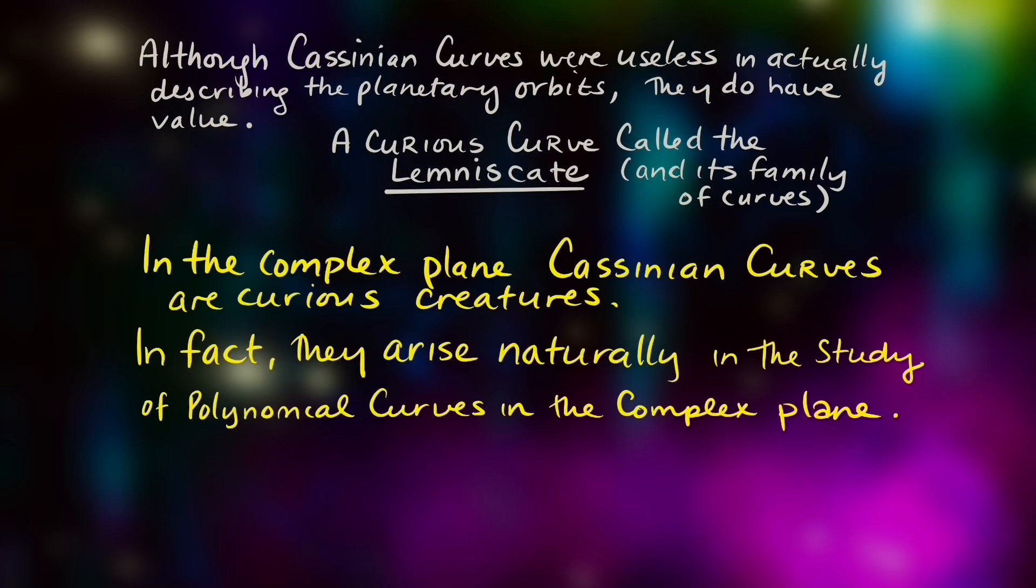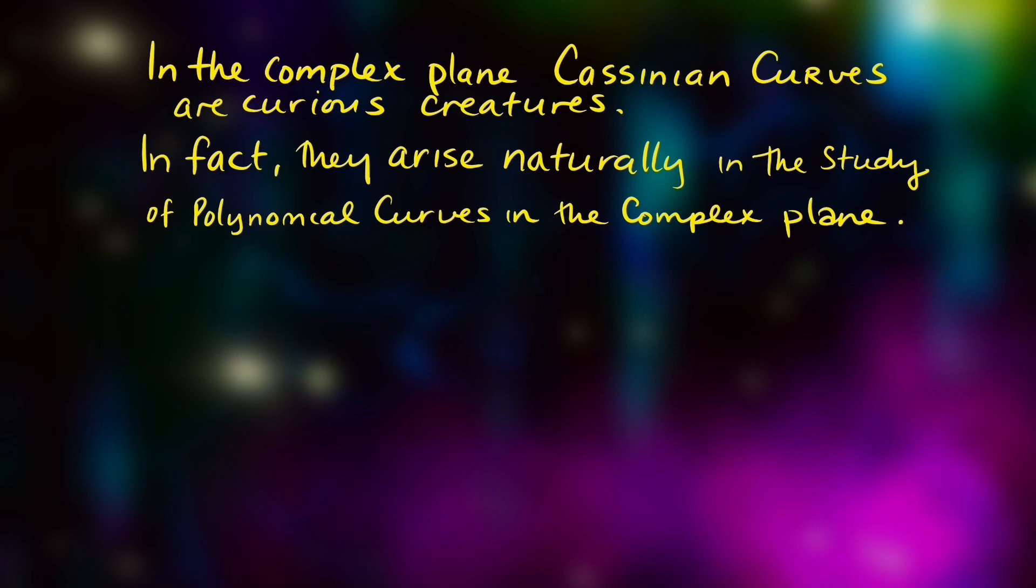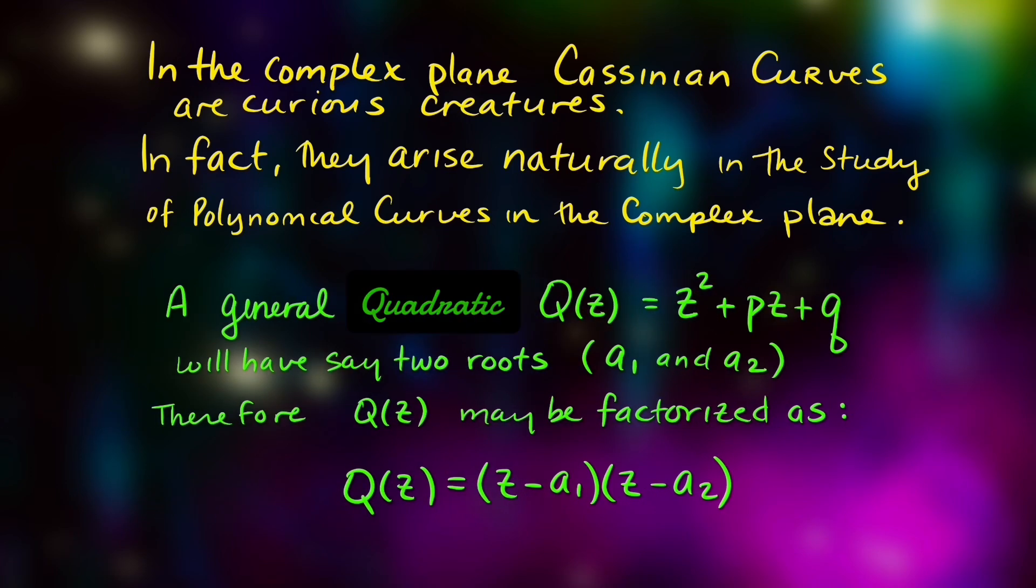So again, although Cassinian curves were useless in actually describing planetary orbits, they do have value. In the complex plane, a Cassinian curve are curious creatures. They actually arise naturally in the study of polynomial curves in the complex plane. So consider the general quadratic, q of z equals z squared plus p of z plus q.